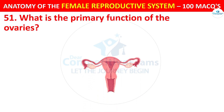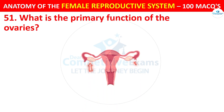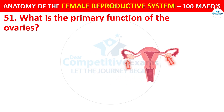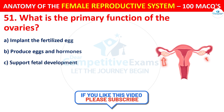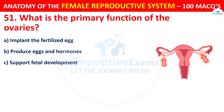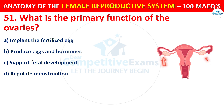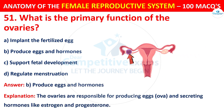What is the primary function of the ovaries? Your options are: implant the fertilized egg; produce eggs and hormones; or support fetal development and regulate menstruation. The correct answer is B — to produce eggs and hormones. The ovaries are responsible for producing eggs and secreting hormones like estrogen and progesterone.